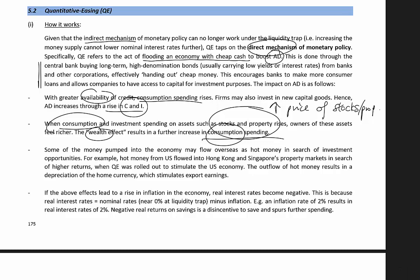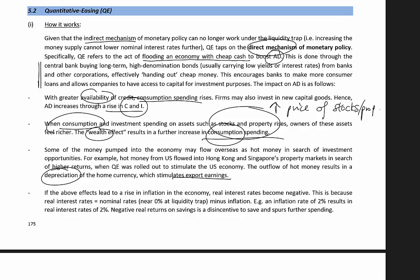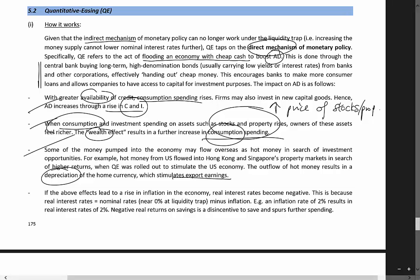Furthermore, when money is printed, some of it lands in the hands of investors who decide to invest overseas. This happened in the US - investors got hold of cheap cash and decided to bring money to Brazil, Hong Kong, or Singapore to invest in property. Hot money flowing out of the country practicing QE causes its exchange rate to depreciate, and if the Marshall-Lerner condition holds, the balance of trade also improves, providing another stimulus to aggregate demand.